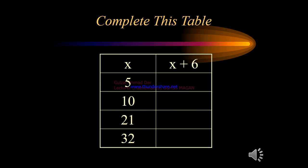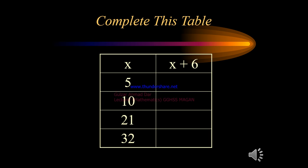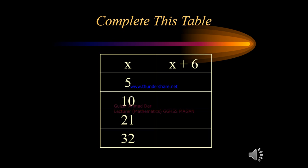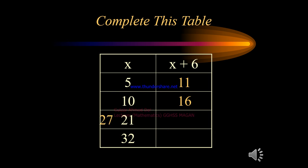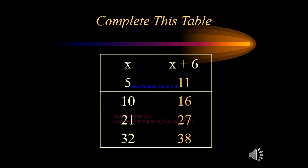Let's complete another table. On the left side we have x, and on the right side we have x plus 6. If x equals 5, the result is 5 plus 6, which is 11. For x equals 10, the result is 16. For x equals 21, it is 27. And for x equals 32, the result is 38.